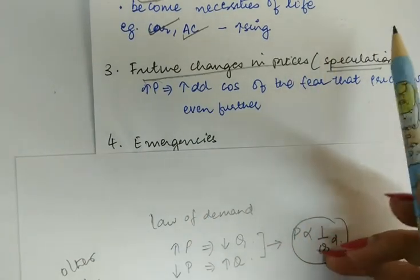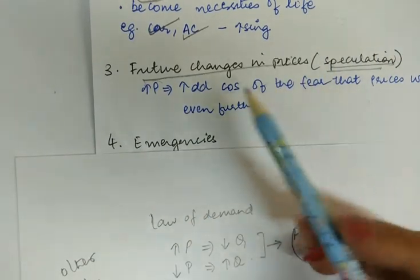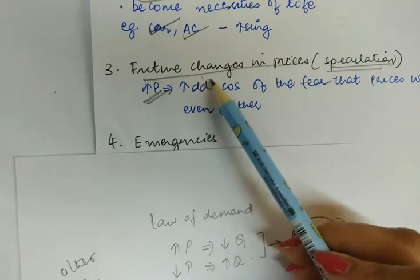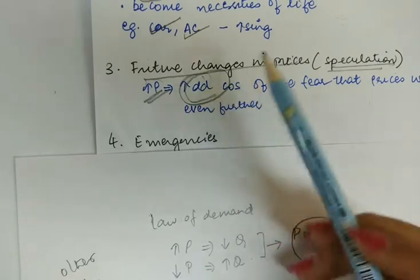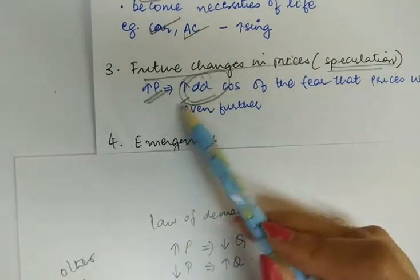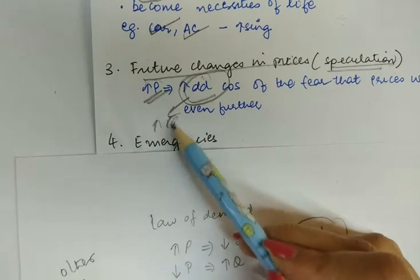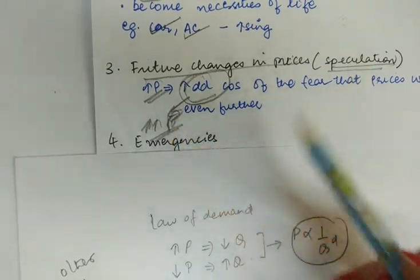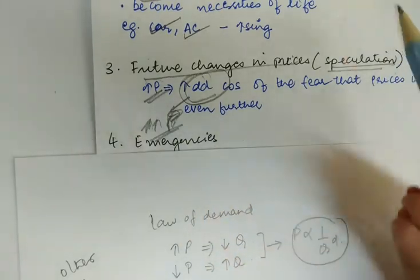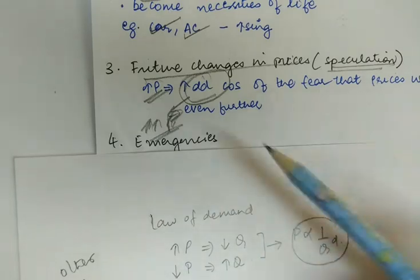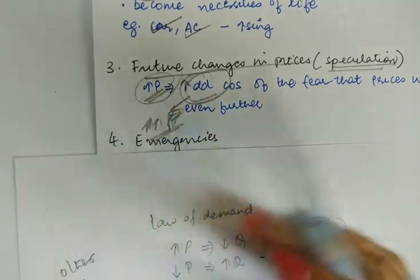The third situation where the law of demand does not hold is speculation — that is, future changes in the prices of a commodity. When the price of a commodity is rising, households tend to purchase larger quantities out of the apprehension that the price may go up even further. So they expect the price to rise further, and they demand more of a commodity at a higher price.